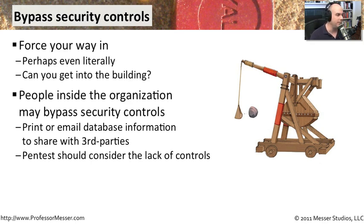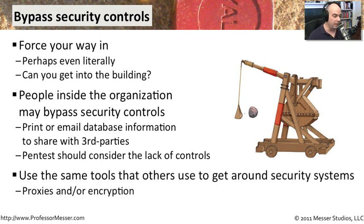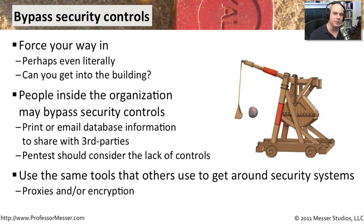Think about how the people internally in your building and on your network have access to different systems. Do they get around your database controls to grab information? Are they taking information from those databases and sharing them with third parties using different tools, like sending it through Google Mail or Yahoo Mail? Your penetration testing should consider this lack of control and see just how much you're able to do with a simple login like everyone uses on your network. You also want to think about using the same tools that others use to get around your security systems — things like UltraSurf and Tor and many other proxies and encrypted methods to get around your existing security controls.